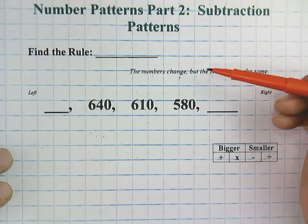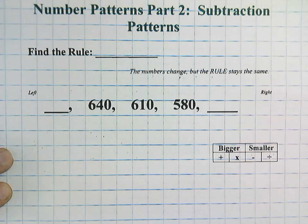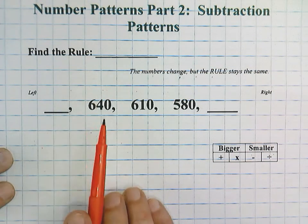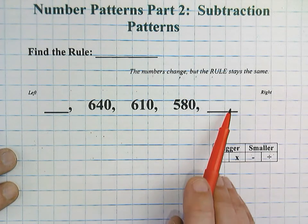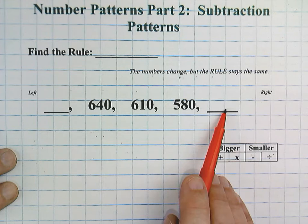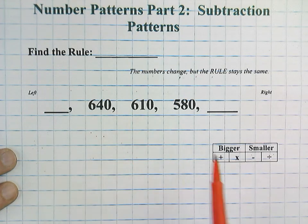Go ahead and try this one. Pause for a second and try to find the rule. Okay, let's solve. Find the rule. We have 640, 610, 580. I notice we have a blank to the right that we need to figure out, and also one to the left. So, let's figure out the rule. Numbers are getting smaller.